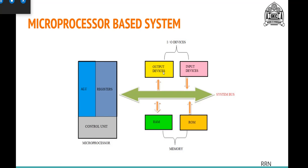This is how the overall microcomputer system looks: a microprocessor, a memory unit, and an I/O unit — all three interacting with each other using the system bus. The system bus, though it feels like a single bus, is divided into various categories: address bus, data bus, control bus, tri-state bus, and so on. We will see each type of bus and its functionality in detail in subsequent classes.